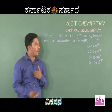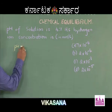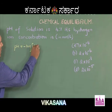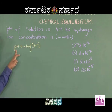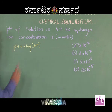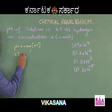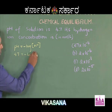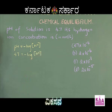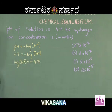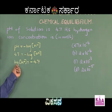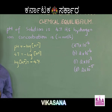We know that pH is equal to minus log of H⁺ ion concentration. pH of the solution is given and we need to calculate the H⁺ ion concentration. So, pH is 4.7, meaning 4.7 = -log[H⁺], or log[H⁺] = -4.7. To calculate H⁺ ion concentration, I should take antilog on the other side, giving antilog of -4.7.